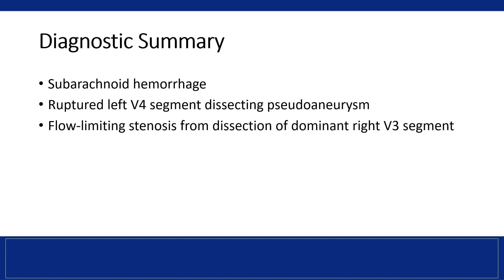In summary, we have a middle-aged man presenting with subarachnoid hemorrhage with bilateral vertebral artery dissections. On the left side, he has a dissecting pseudoaneurysm of the left V4 segment immediately distal to the left PICA origin. On the right side, he has critical flow-limiting stenosis of the right V3 segment.